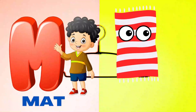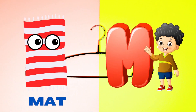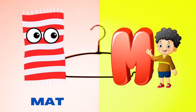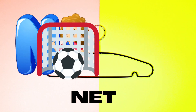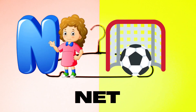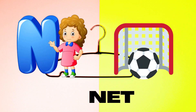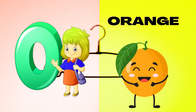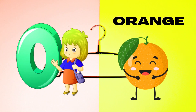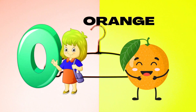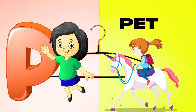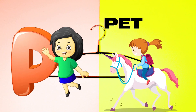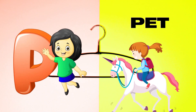M is for Mat, M-M-Mat. N is for Net, N-N-Net. O is for Orange, O-O-Orange. P is for Pet, P-P-Pet.